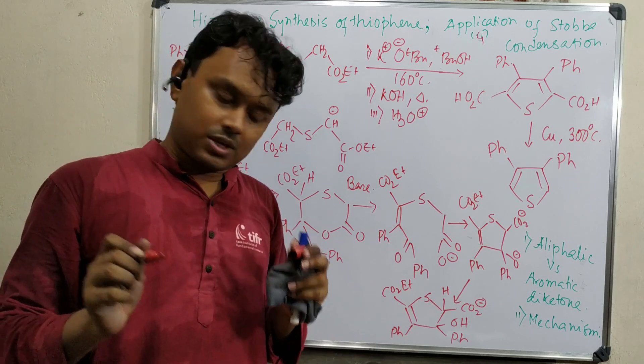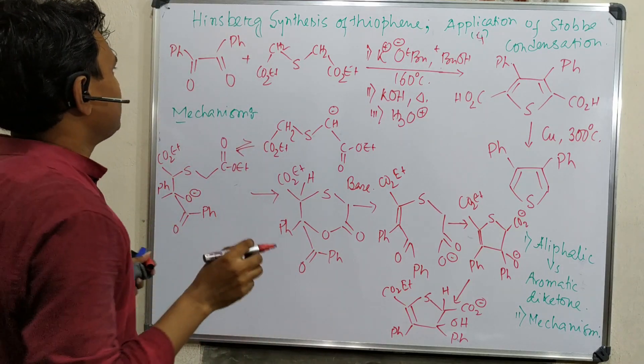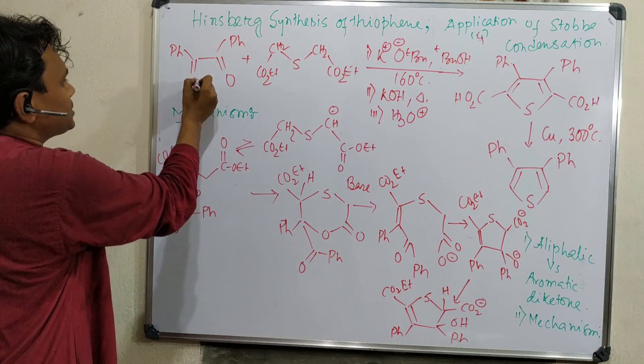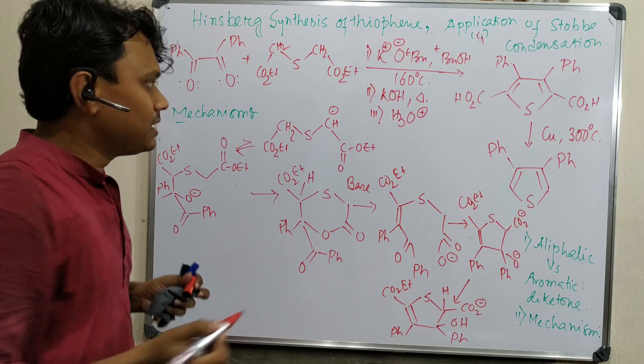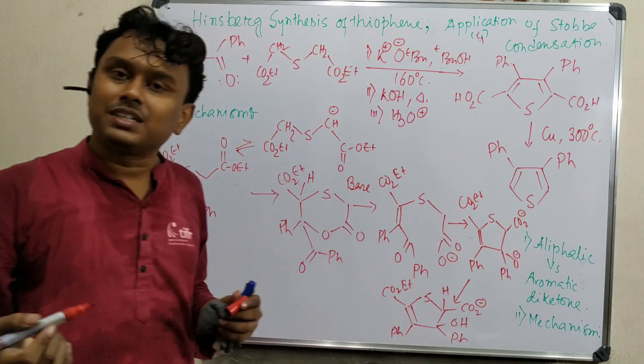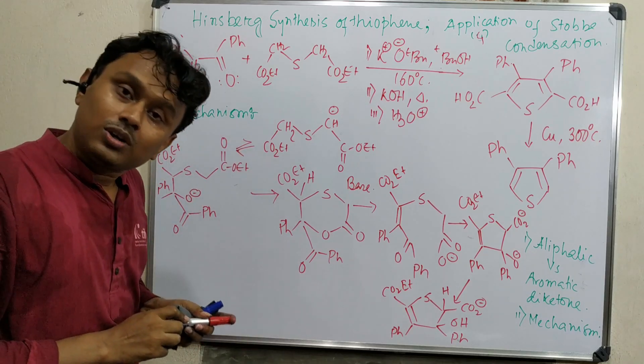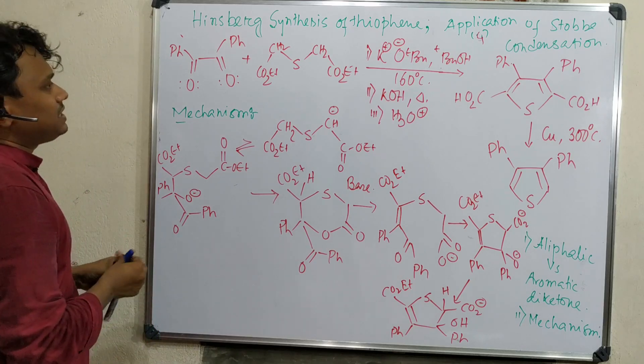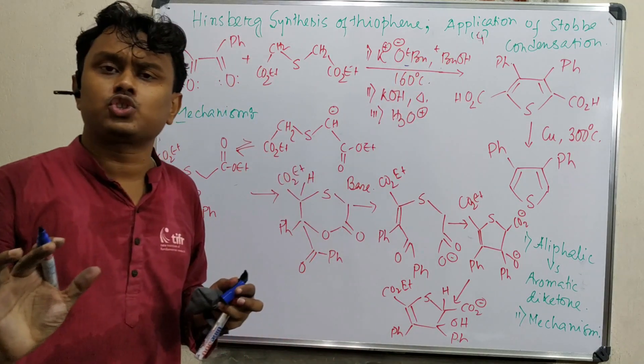So let's start. The most interesting part is the reagent. Here the first reagent used is 1,2-dicarbonyl compound benzil. Now we will discuss aliphatic versus aromatic diketone. What is the advantage? Why have I taken the aromatic one, not the aliphatic? Because the base and reaction condition use potassium tertiary butoxide, which is very strong.